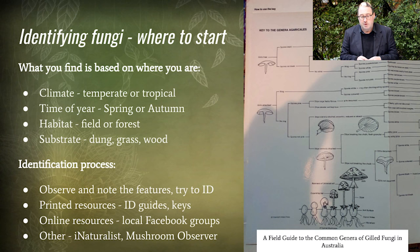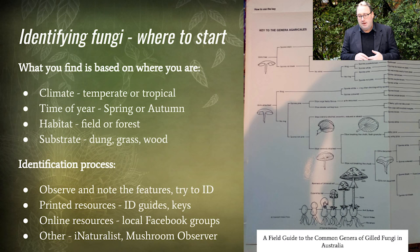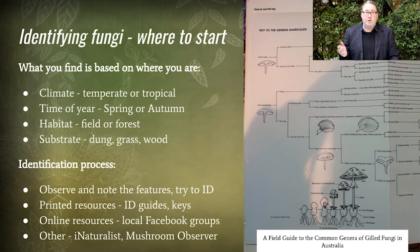I mentioned keys. You'll notice on the right-hand side of this slide there's a stepwise illustration where you can look at features of the mushrooms — like the gills, how the cap is attached to the stem, the colours, and so on. Using the stepwise process, you can make decisions about the features, and that will help you to at least get to genus.